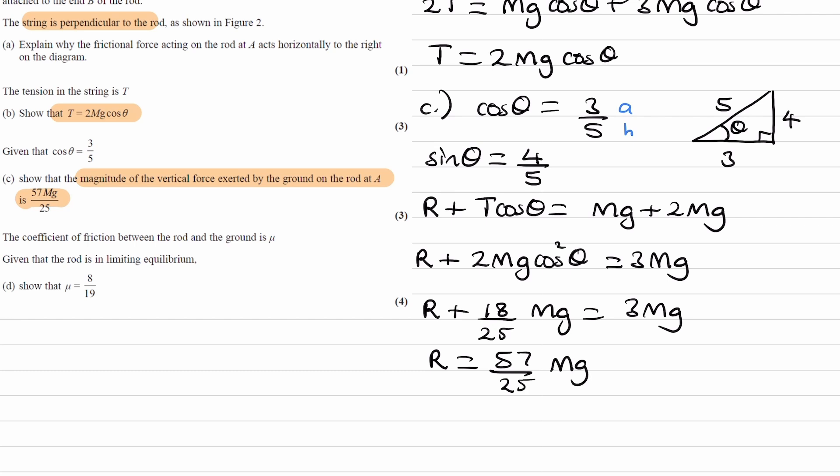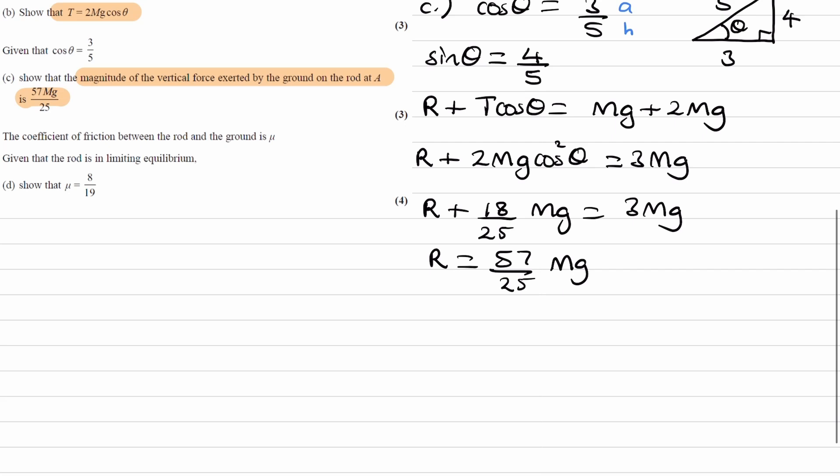For the final part, part D, the coefficient of friction is mu. This is between the rod and the ground. It's in limiting equilibrium, meaning that the frictional force is equal to mu R. It's on the point of sliding. And we're trying to show that mu is equal to 8 over 19.